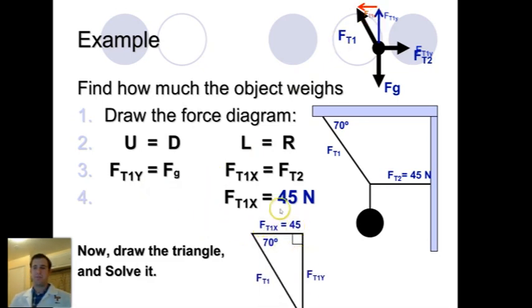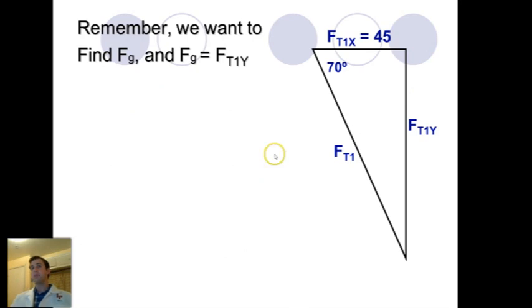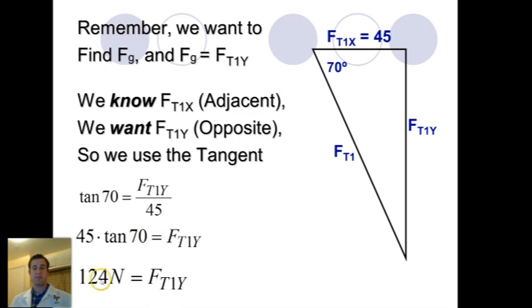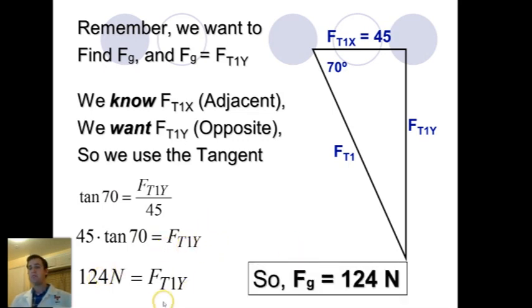So now let's draw our triangle and solve for the triangle. So we have our angle here. We have our T one X, which is the 45 is this side component. The T one Y is the vertical that we're trying to solve. And then this angle is 70 degrees. So we need to find F G. And we know that F G is equal to T one Y, this component over here. So we want to find our adjacent. I mean, excuse me, we know our adjacent. We want to find our opposite. So we're going to use our tangent because it involves the adjacent and the opposite sides. So we plug in tangent of 70 is equal to our T one Y divided by 45. And then we multiply by 45 on both sides. And then when we plug that into the calculator, we get 124 newtons. Well, since FT one Y was equal to F G, we know that F G is 124, meaning the weight of that object was 124 newtons.